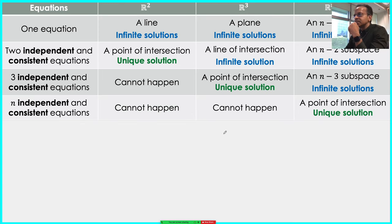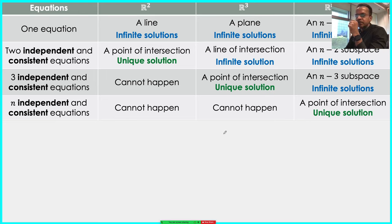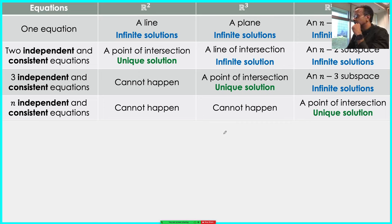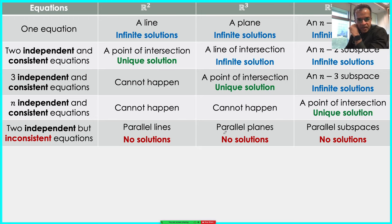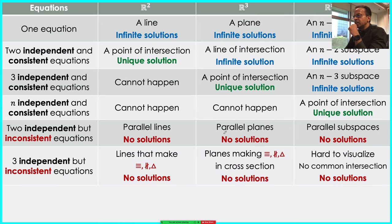Extrapolating: n independent and consistent equations cannot happen in R2 if n is more than two, nor in R3 if n is more than three. In Rn, n independent and consistent equations give just enough to constrain everything — a single point of intersection, a unique solution. If you have two independent but inconsistent equations in R2, you get parallel lines — no solutions; in R3, parallel planes — no solutions.